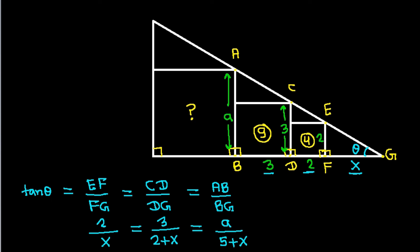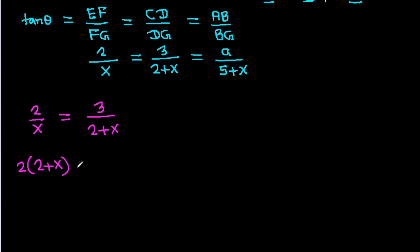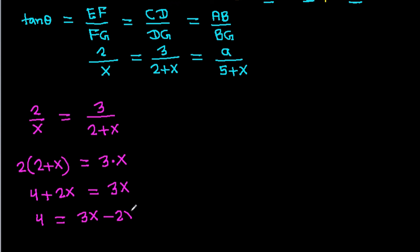Now, we have 2 over X equals 3 over 5 plus X. If we cross multiply, then 2 times (5 plus X) equals 3 times X. That gives us 10 plus 2X equals 3X, so 4 plus 2X equals 3X, and we get X equals 4.